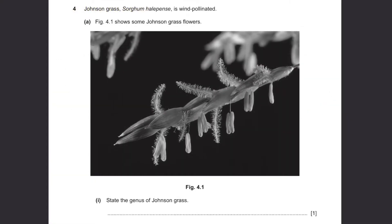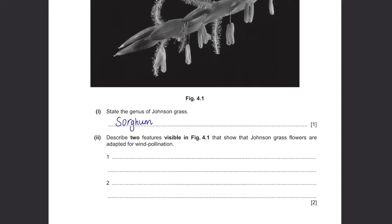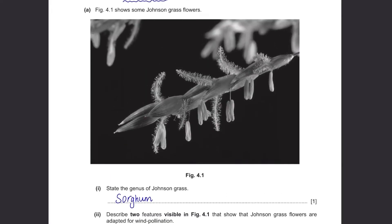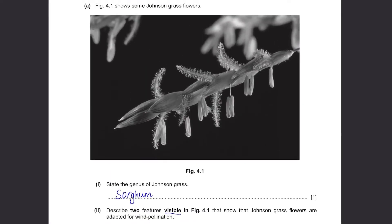Johnson grass, Sorghum halepense, is wind pollinated. Part A asks us to state the genus of Johnson grass. The words in italics stand for genus and species, so the answer is Sorghum — make sure you write it exactly as given. For the second part, describe two features visible in figure 4.1 showing adaptation for wind pollination: feathery stigma with a large surface area, and anthers hanging outside the flowers so wind can easily carry away the pollen.